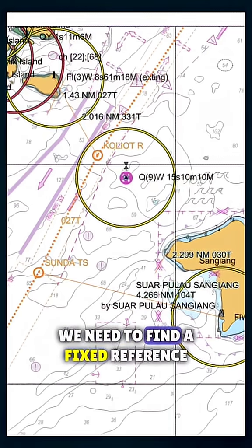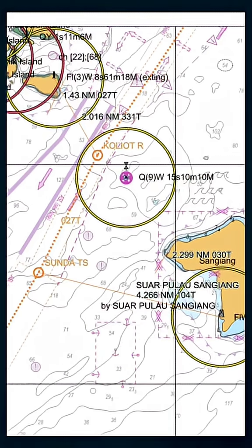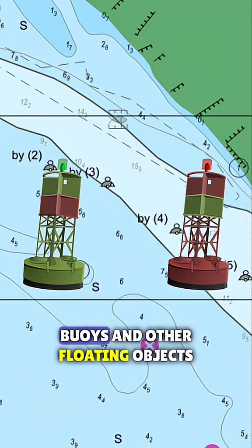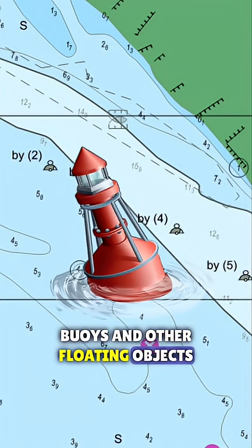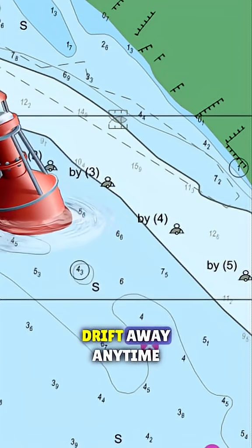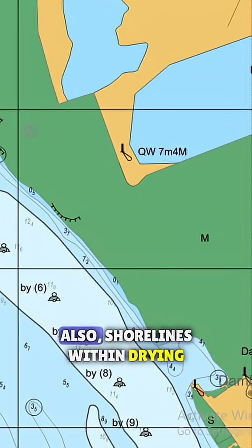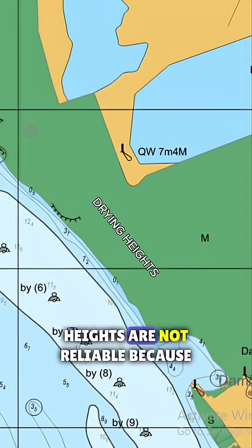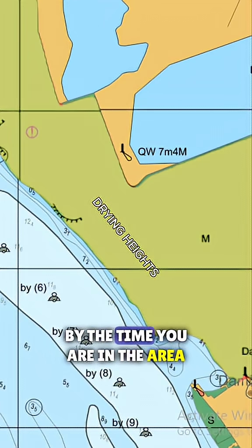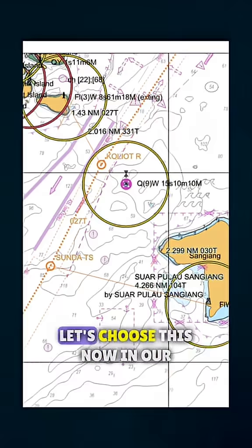First, in a chart, we need to find a fixed reference point that is easily recognizable on radar. Buoys and other floating objects are not included because they can drift away at any time. Also, shorelines within drying heights are not reliable because these might be above the water by the time you are in the area.